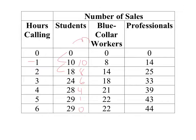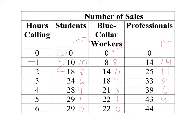Continuing for students: six, four, one, and zero — the marginal benefit of the sixth hour soliciting students is zero. We do the same and compute the marginals for blue-collar workers: eight, six, four, three, one, and zero. Then the marginals for professionals: fourteen, eleven, eight, six, four, and one.